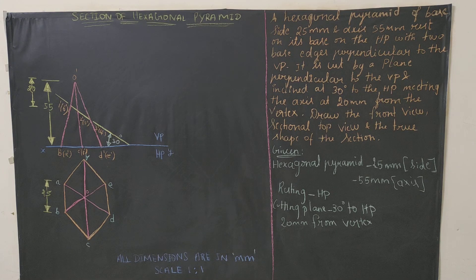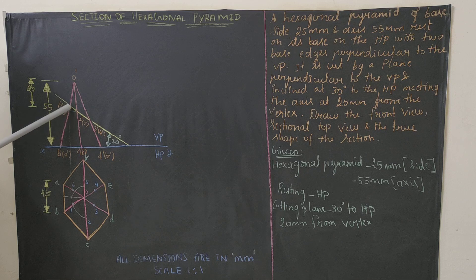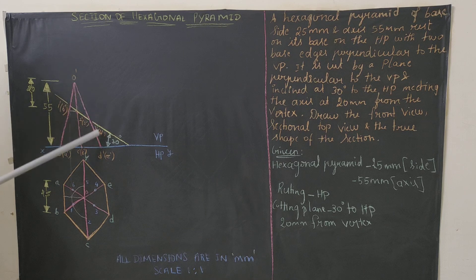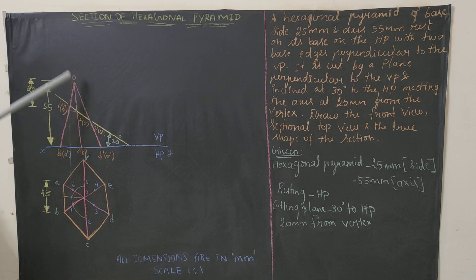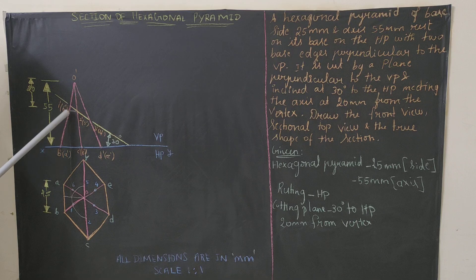Now extend all cutting points on the cutting plane downward to get the sectional top view. Extend cutting point 1-dash vertically — between O and B you get point 1, and between O and A you get point 6. Extend 3-dash vertically — between O and D you get point 3; extend 4-dash — between O and E you get point 4. Points 2 and 5 lie on the axis, making them difficult to plot directly.